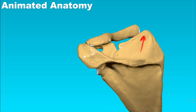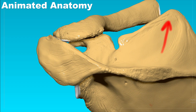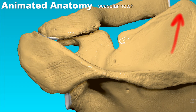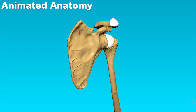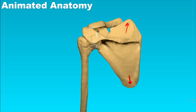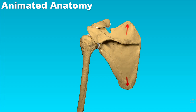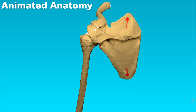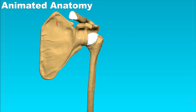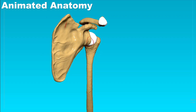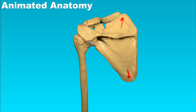One thing not to forget is that here we have the scapular notch. The scapula is normally a very free and movable bone. It is only attached at the acromioclavicular joint and at the glenohumeral joint. Besides that, the bone is completely free and only held by some muscles.